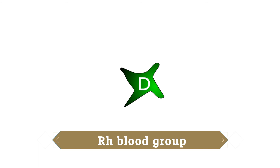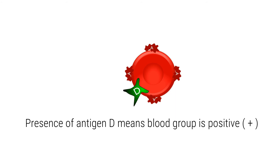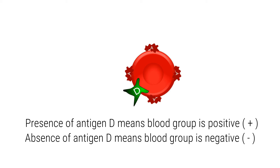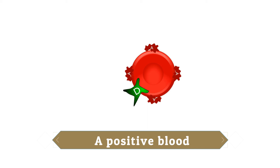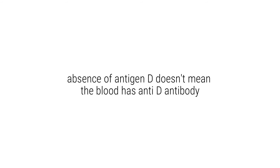If a person has antigen D on the surface of the RBC, we call him positive. If there is no antigen D, we call him negative. For example, if Jake has ABO A and Rh positive blood, this can also be called A positive blood. It is important to remember that Rh negative people do not have NTD antibodies in their blood like in the ABO system. So Rh negative means the person has neither the D antigen nor the NTD antibodies in their blood.